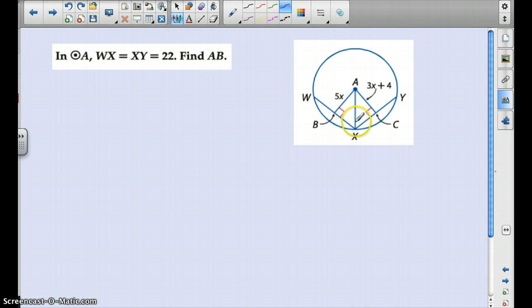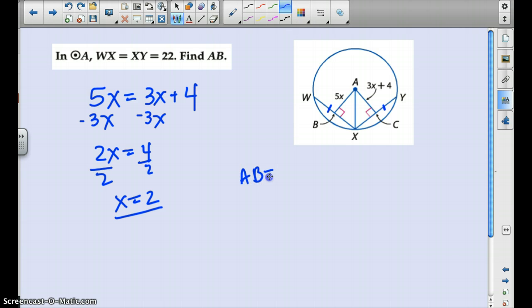So WX and XY are 22. So we know that these two chords are the same or they are congruent to one another. So we want to find AB. So since we have these chords that are the same, we can set these two segments, these perpendicular segments that are equal. We know that they are equidistant. We can go ahead and set them equal to each other. So we'll subtract 3X from both sides. We have 2X equals 4. Divide by 2. X equals 2. And we want to find AB. So we're going to say AB is equal to 5X, which will be equal to 5 times 2, which is equal to 10. So AB equals 10.